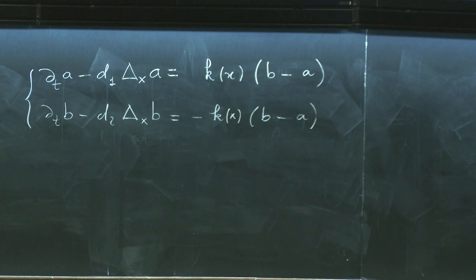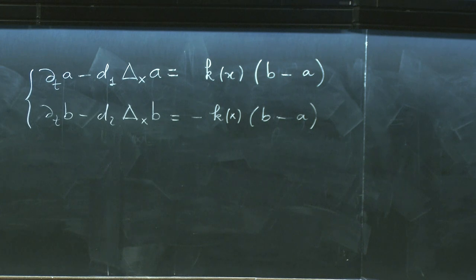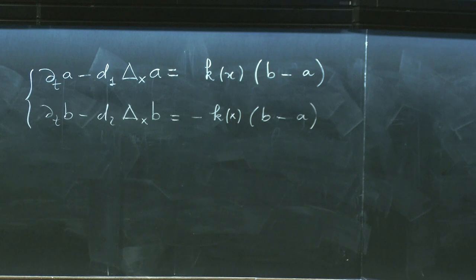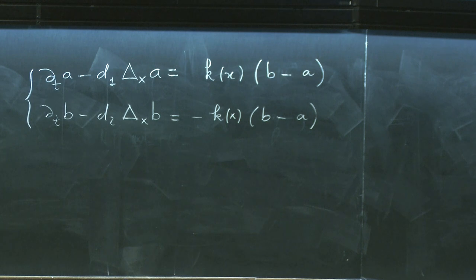This corresponds to the case where the catalyst is a solid fixed in the reactor, giving k as a given function of x. If the catalyst is liquid or in gas phase, it would follow the flow, and one would write a convection-diffusion equation coupled with a Navier-Stokes equation for the solvent. This is one of the simplest possible models coming out of chemistry.